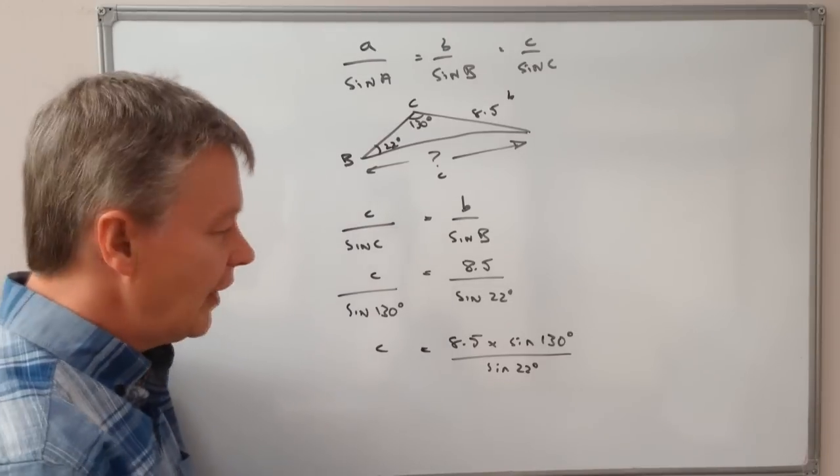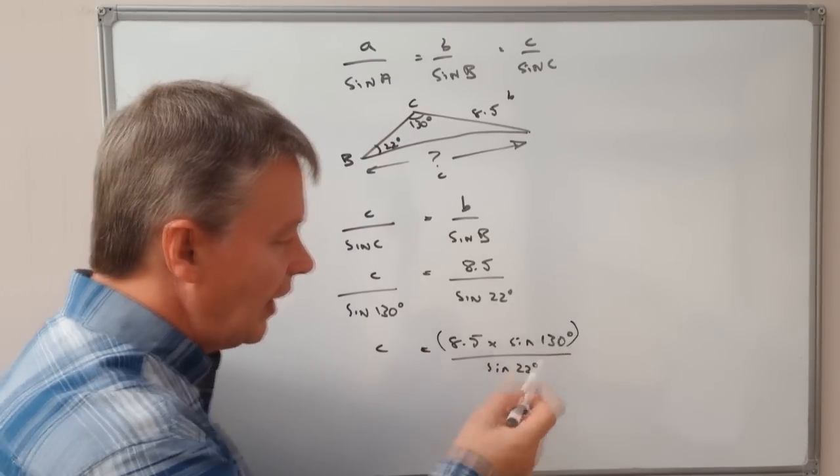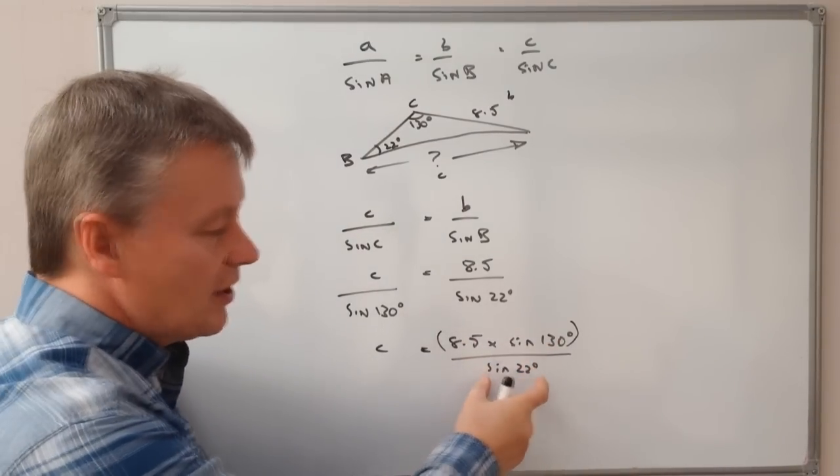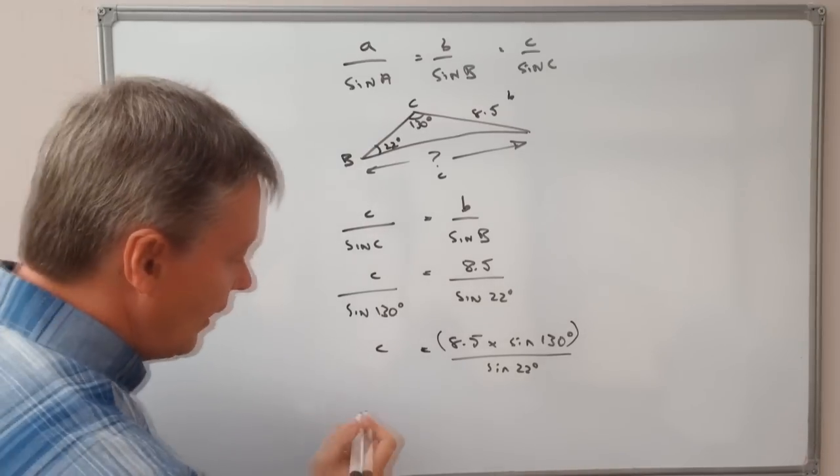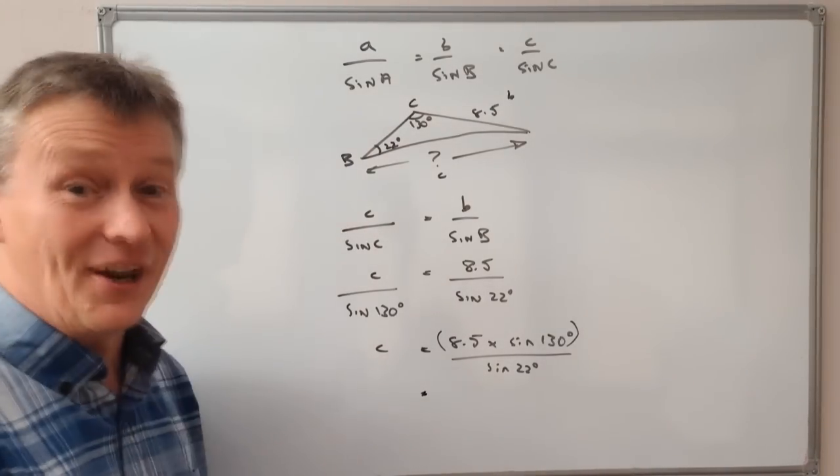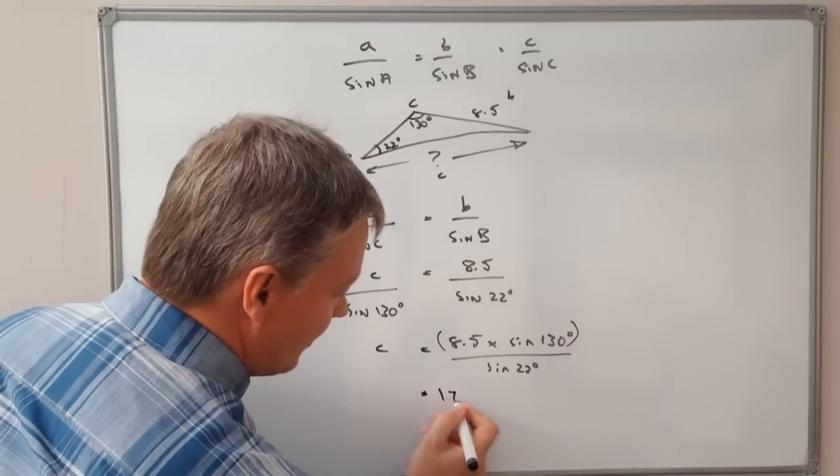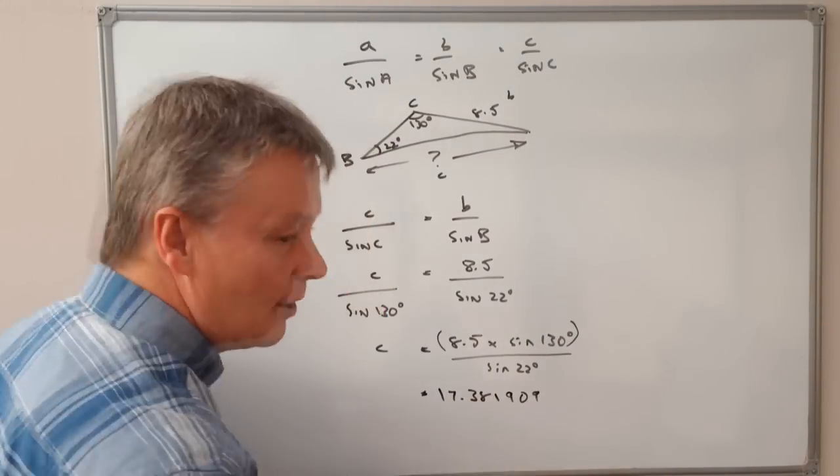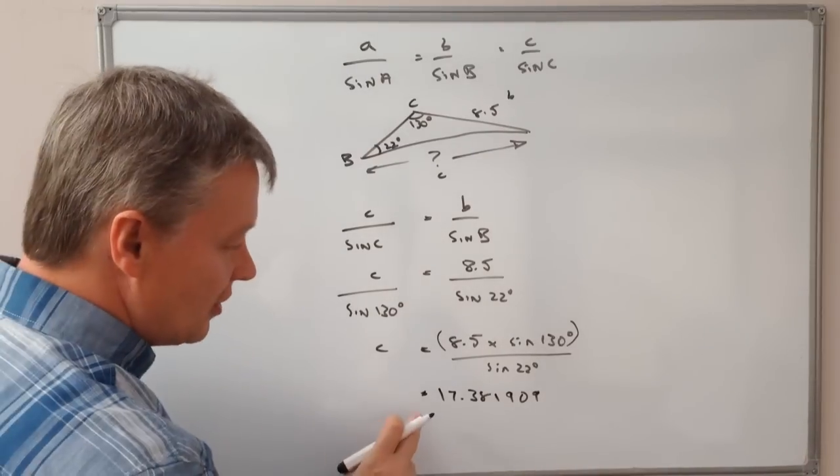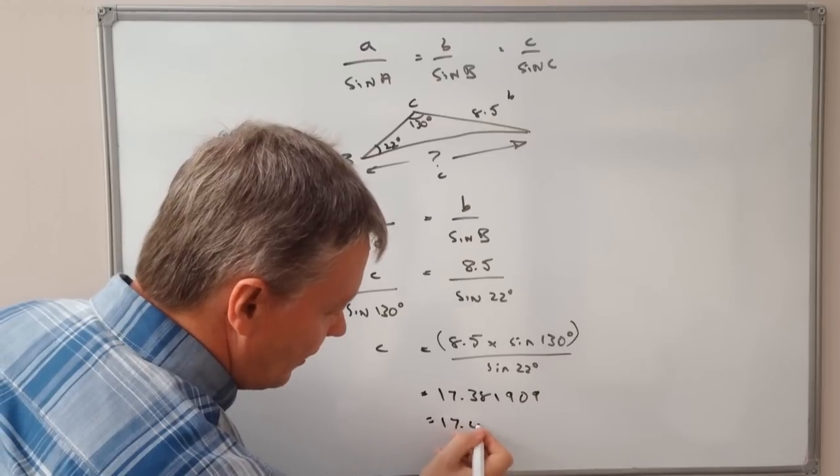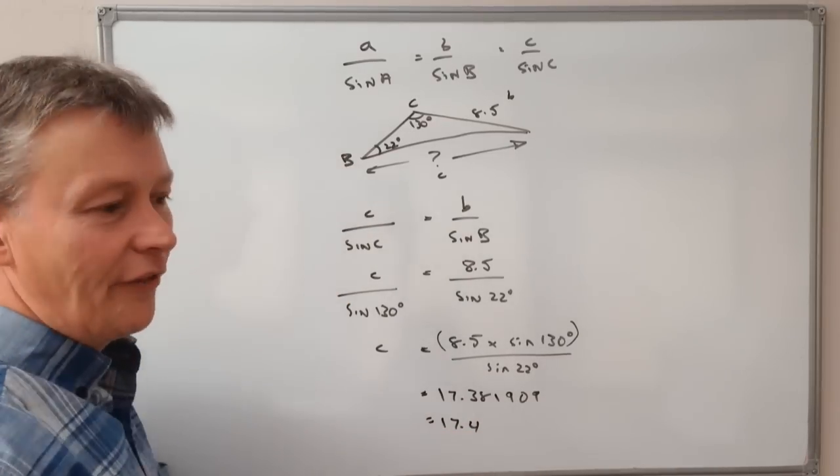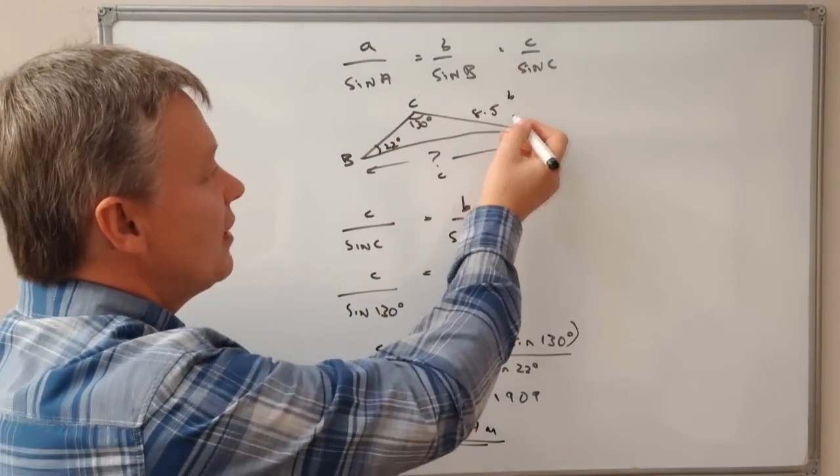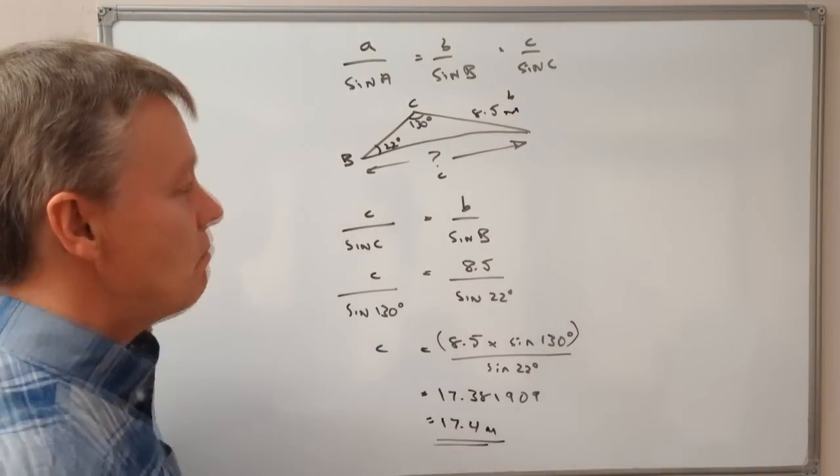You need to be a little bit careful with these, you need to make sure that maybe you put that into brackets, to tell the calculator to divide that term by sine 22. Once you've put it into the brackets and into the calculator, you'll get something like this. So you get 17.38, and it goes on a little bit, 1909, blah, blah. So to three significant figures, we can call that 17.4. This particular triangle is 17.4 metres because this information is given to us as a metre.